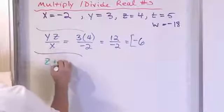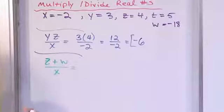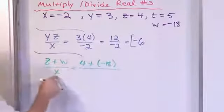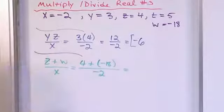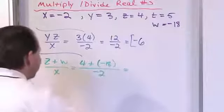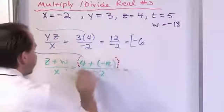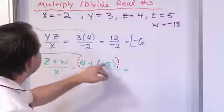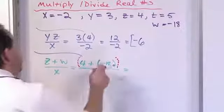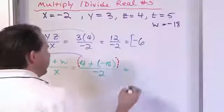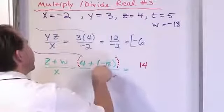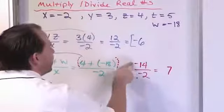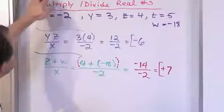Let's say we have z plus w over x. Substituting: z is 4, plus w which is negative 18, all on the top. On the bottom is negative 2. There's addition on the top, so we handle it first — pretend there's an invisible parenthesis. 4 plus negative 18: different signs, so ignore the signs and subtract. 18 minus 4 is 14, and it takes the sign of the larger number, which is negative. So we have negative 14 on top. Now, negative 14 divided by negative 2 — same signs — gives positive 7.